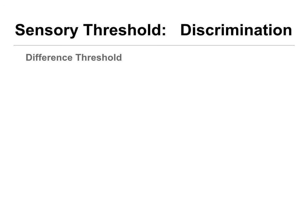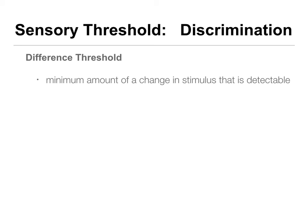The other thing we talk about in terms of sensory thresholds is discrimination - being able to tell the difference between two stimuli. A difference threshold is the minimum amount of change in a stimulus that's detectable. My daughter asks me to turn the volume up; I turn it up one click and she says it's not any different. I hadn't hit her difference threshold - she couldn't tell it was louder.